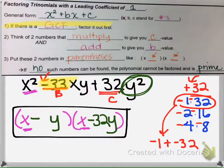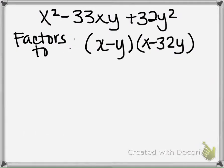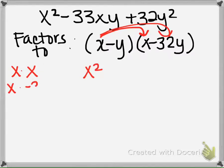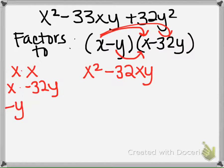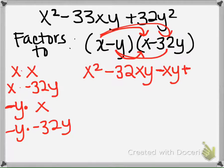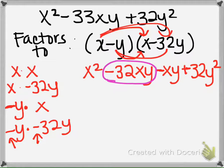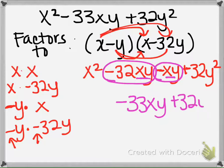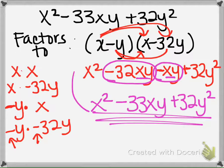Let's check this answer by multiplying out. X times X is X², x times negative 32y is negative 32xy, negative y times x is negative xy, and negative y times negative 32y is positive 32y². Combining the like terms negative 32xy and negative xy gives negative 33xy, and we recover the original expression, confirming the factored form is correct.